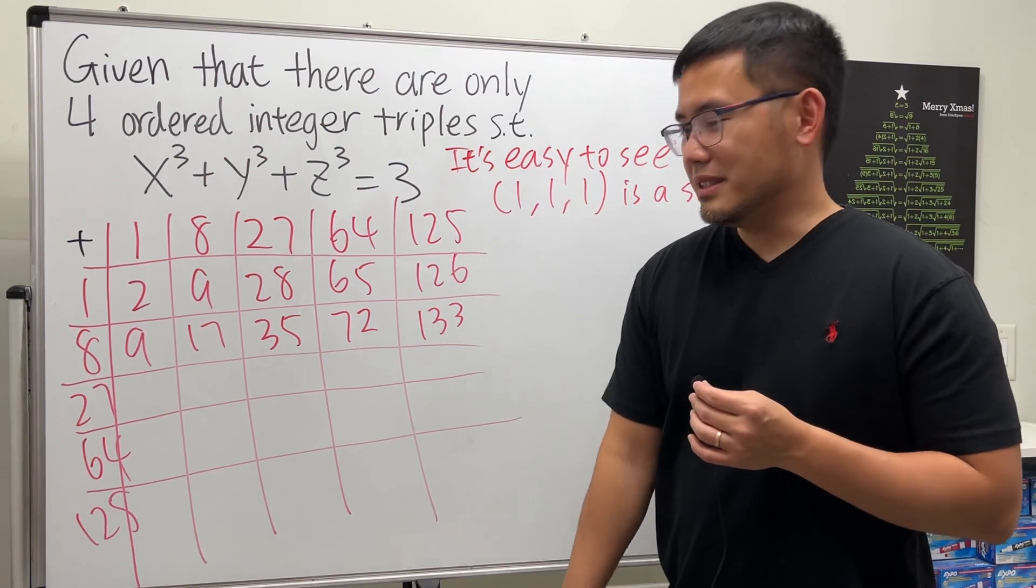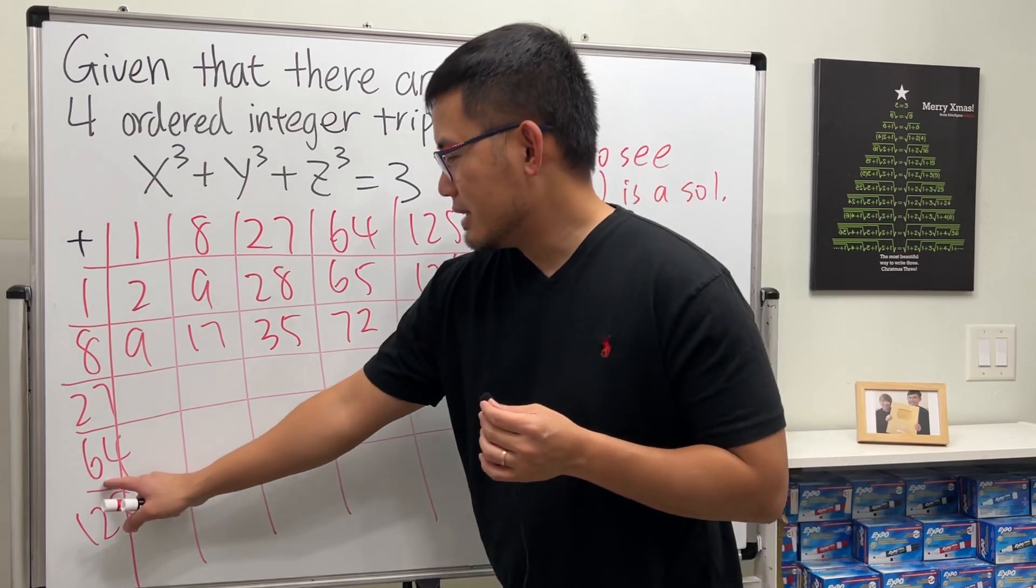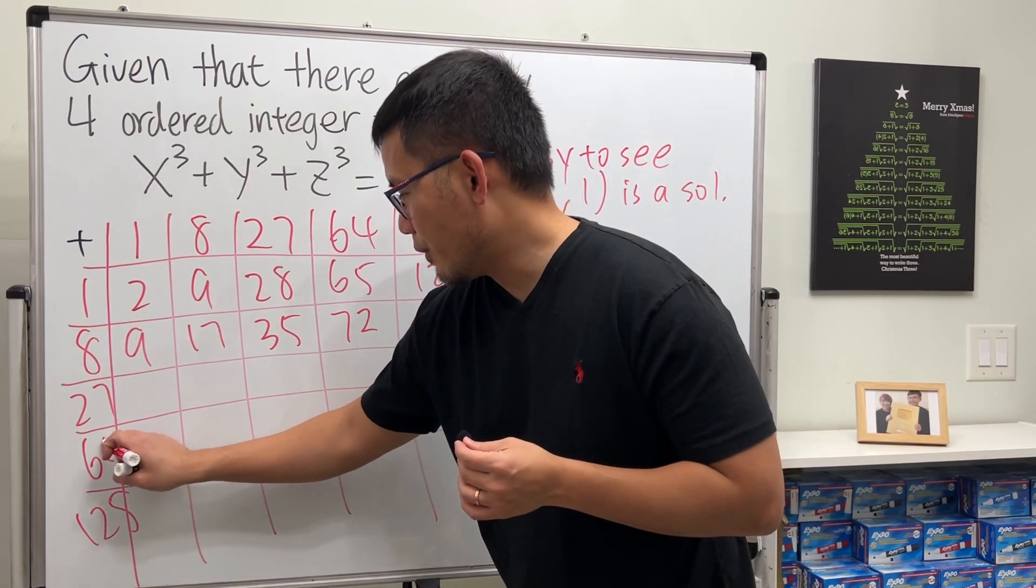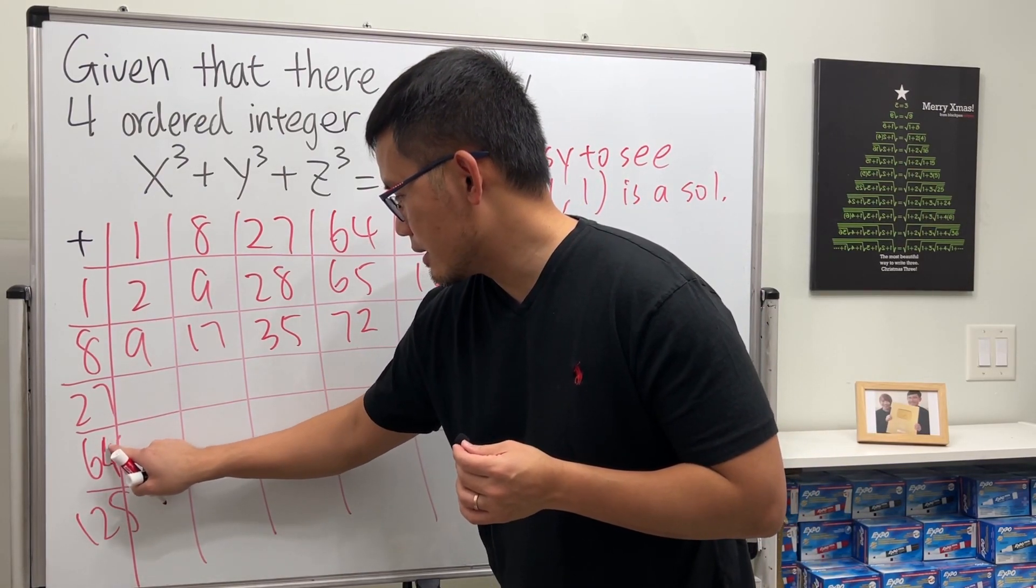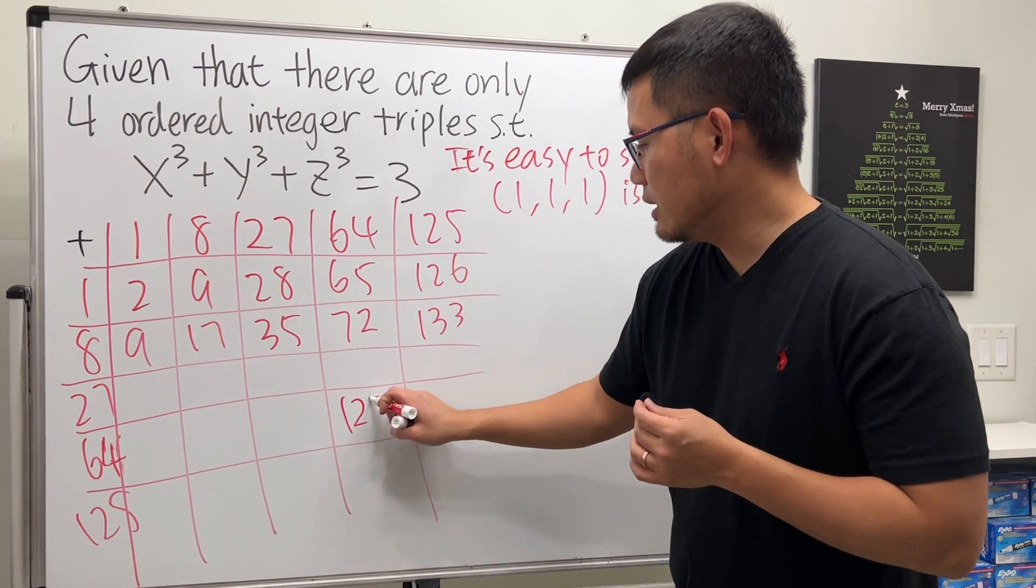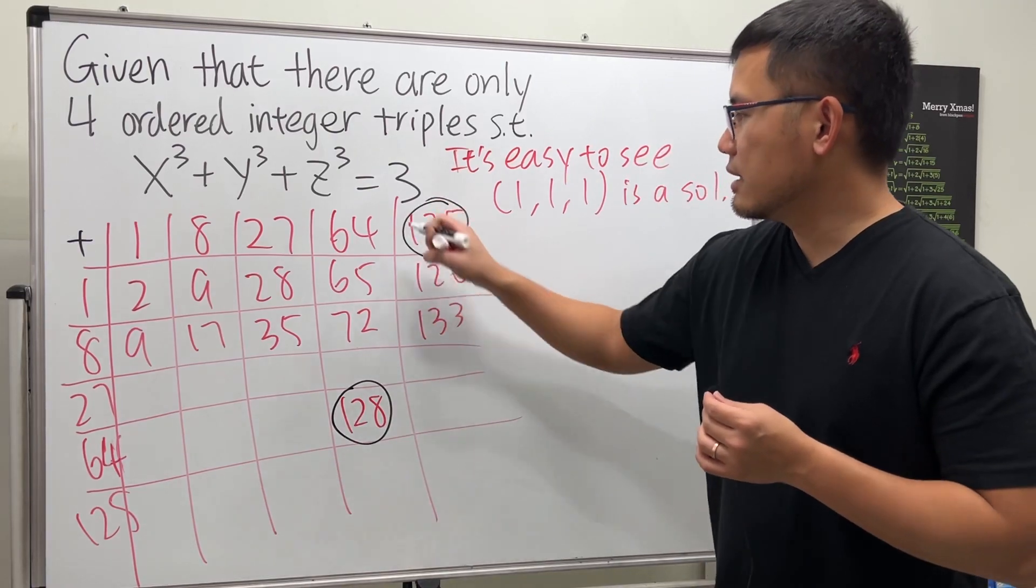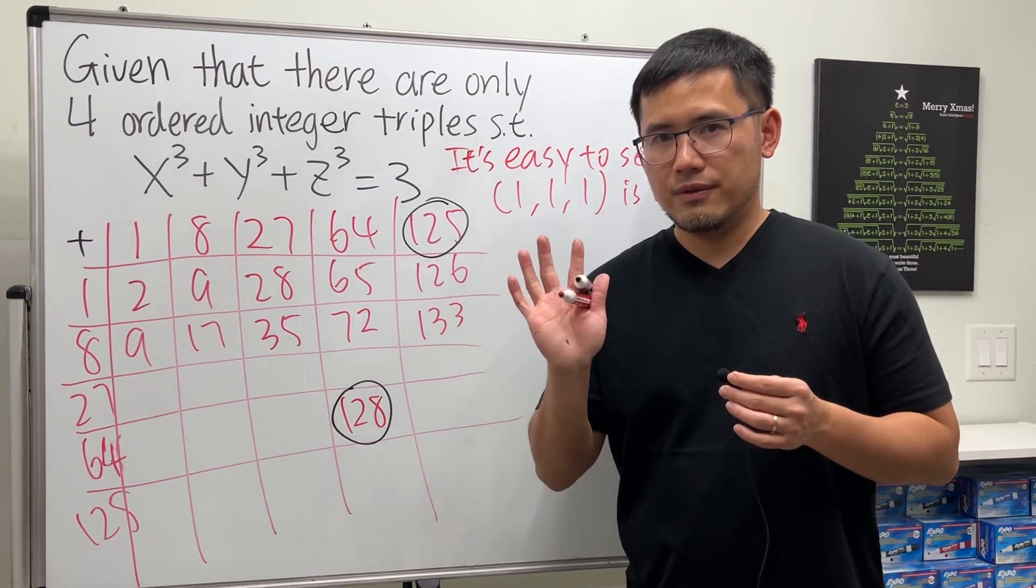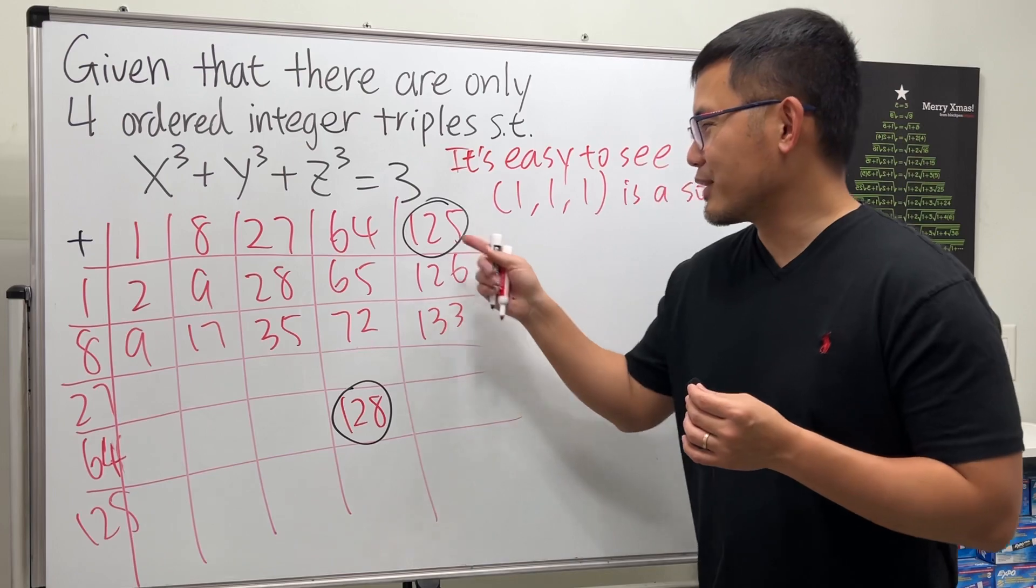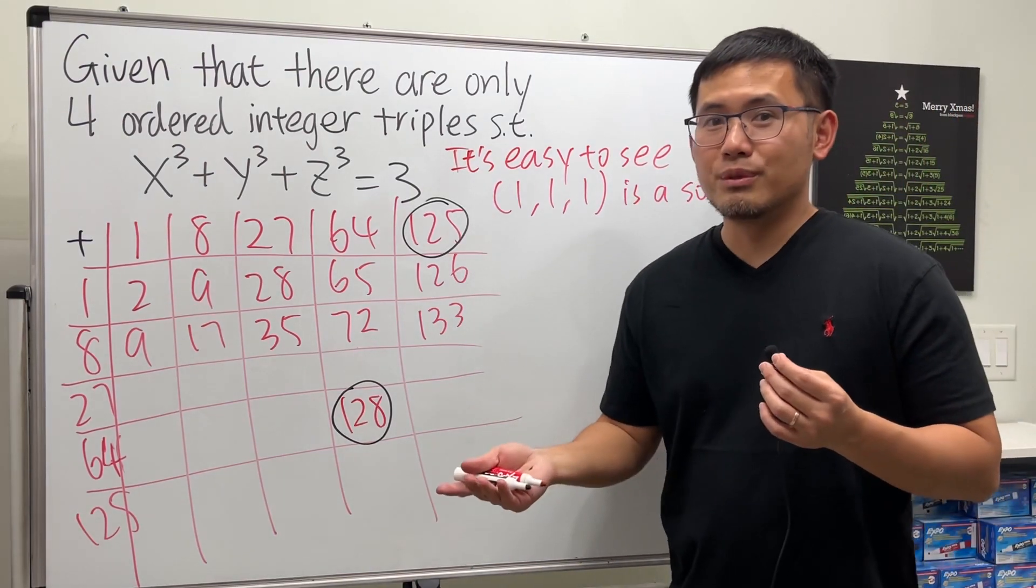But the interesting thing is that if you jump to here, notice that 64 plus 64 is 128. And this and that differ by 3. This is 5³, differ by 3. And we are pretty much done.